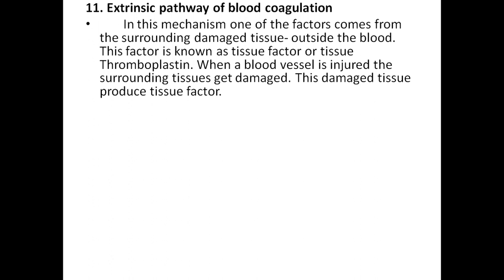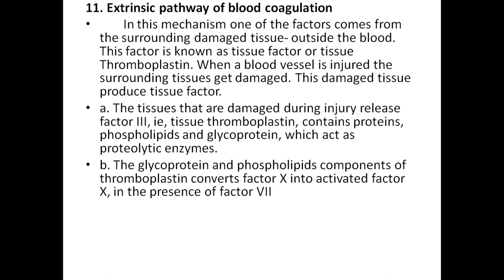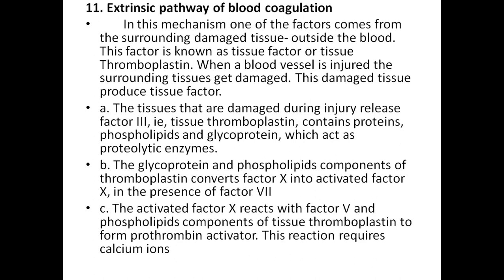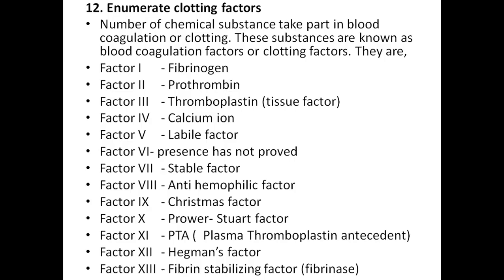The extrinsic pathway of coagulation: in this mechanism, one of the factors comes from surrounding damaged tissue outside the blood — this factor is known as tissue factor or tissue thromboplastin. When a blood vessel is injured, surrounding tissue is damaged and releases a tissue factor. The damaged tissue releases factor 3 — tissue thromboplastin — which contains protein, phospholipids, and glycoprotein acting as a proteolytic enzyme. The glycoprotein-phospholipid components of thromboplastin convert factor 10 into activated factor 10 in the presence of factor 7. Activated factor 10 then reacts with factor 5 and phospholipid components of tissue thromboplastin to form prothrombin activator; this reaction requires calcium ions.